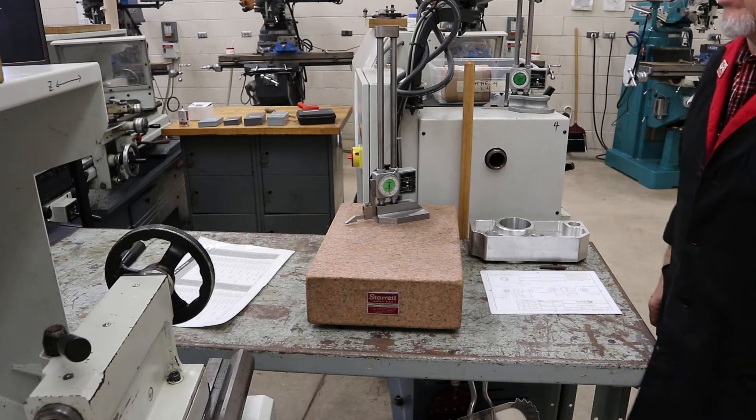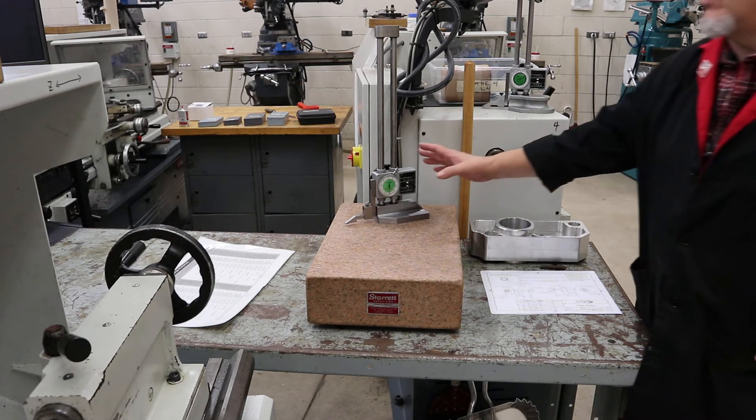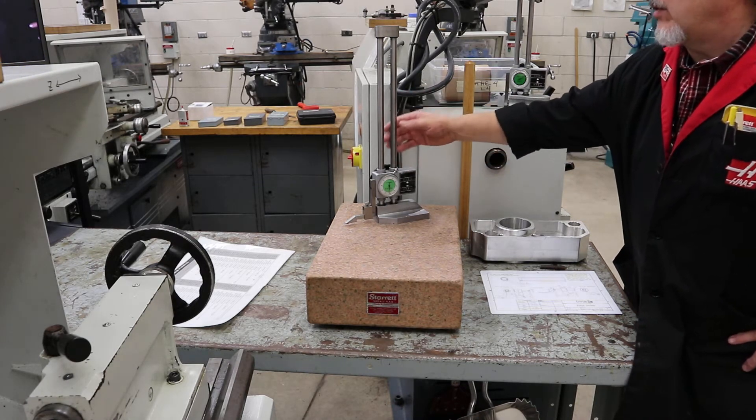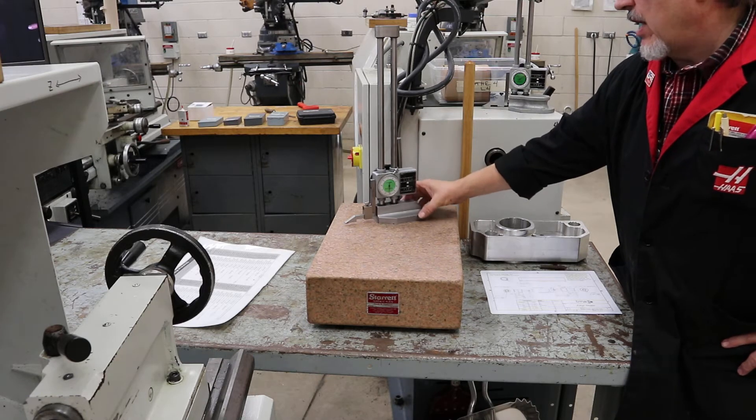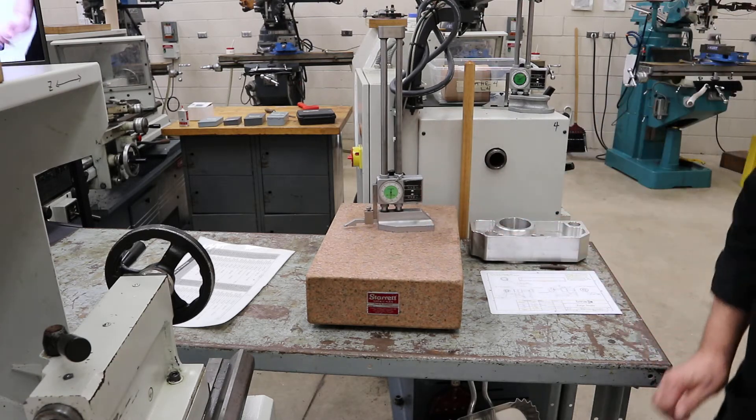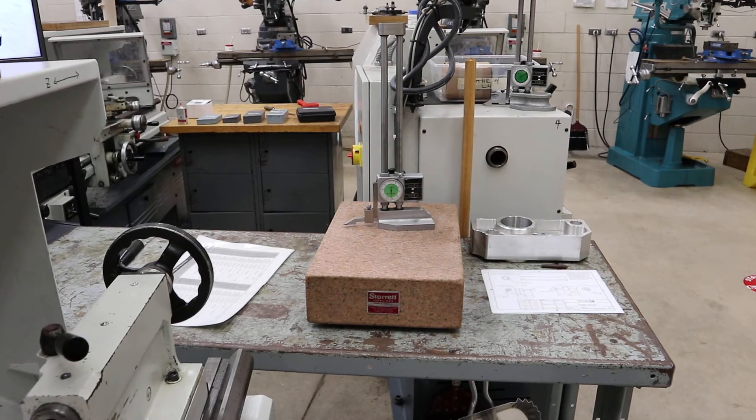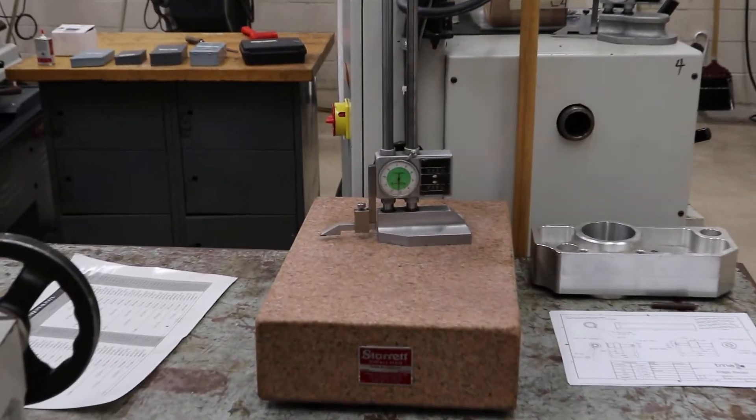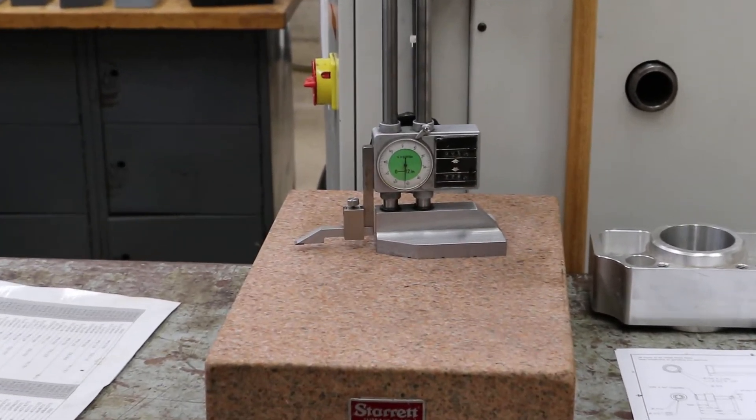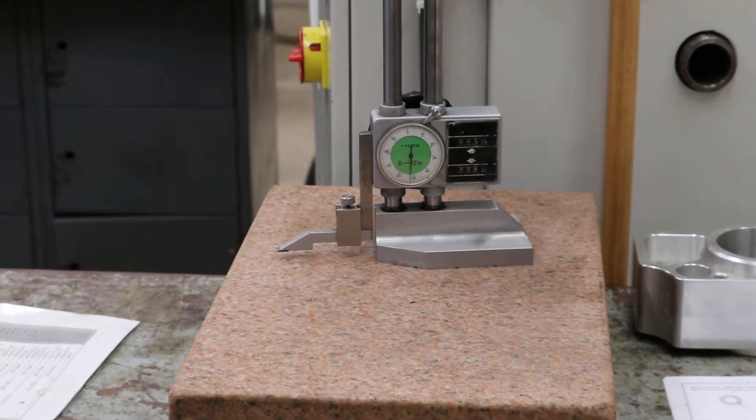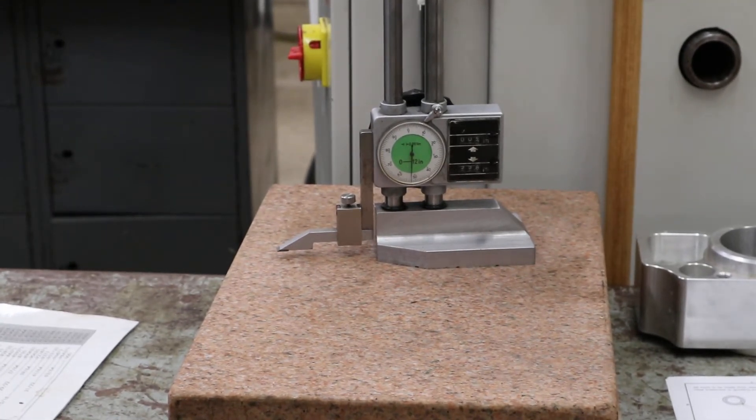Hello, on this video we are going to be talking about the height gauge. This is one kind. There are several different kinds and we would use it to measure the length of something. If I only have zero to six inch calipers and I have a 12 inch height gauge, I can measure more.